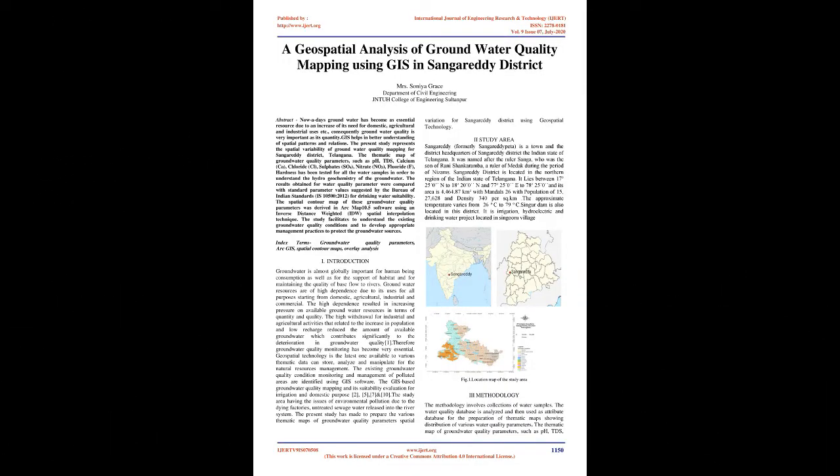A Geospatial Analysis of Groundwater Quality Mapping using GIS in Sangareddy District. Abstract: Nowadays groundwater has become an essential resource due to an increase of its need for domestic, agricultural and industrial uses. Consequently, groundwater quality is very important as its quantity. GIS helps in better understanding of spatial patterns and relations.